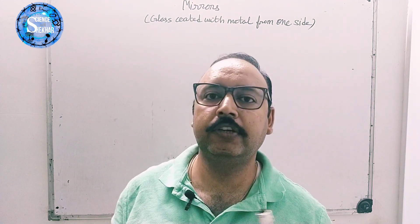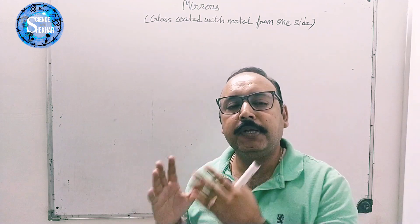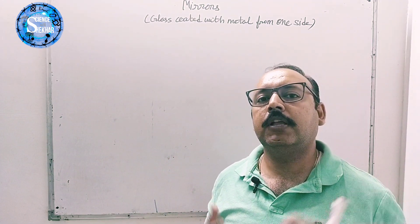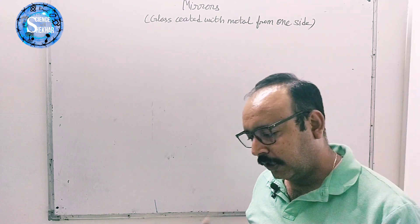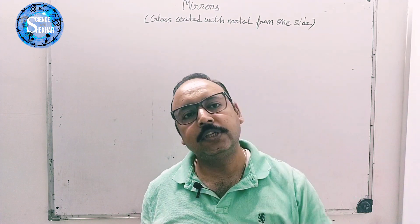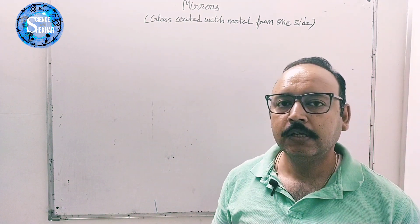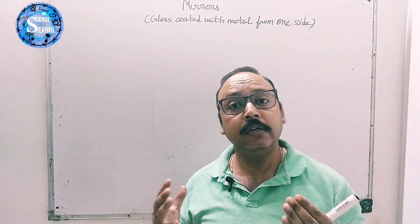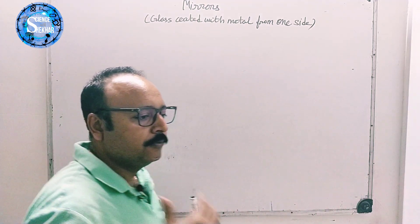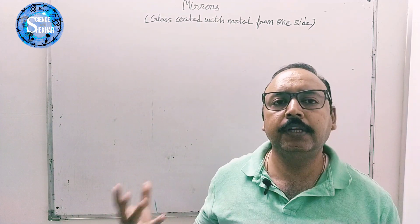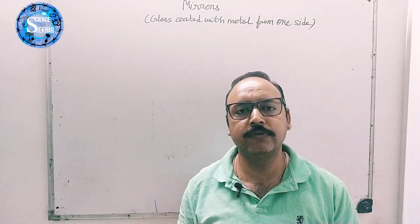The next topic is mirrors. Mirrors are actually glasses which are coated with one special type of metal — that is silver — and produce a clear image. Basically there are two types of mirrors. Generally we have mirrors at home, in our cars, and everywhere we are using these mirrors.